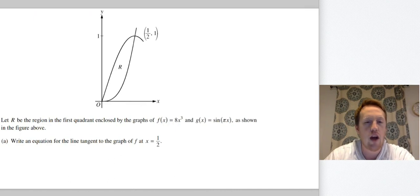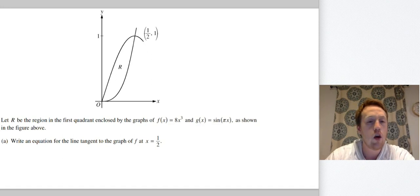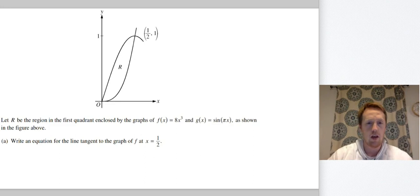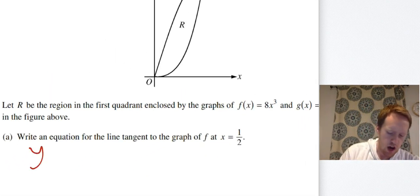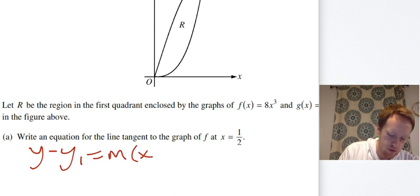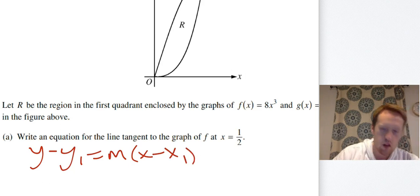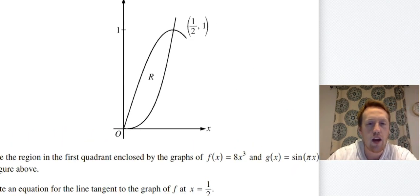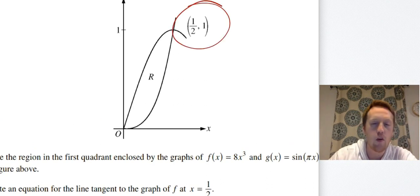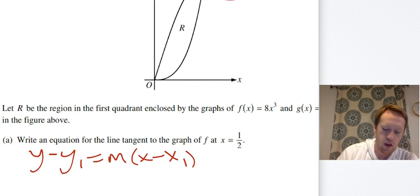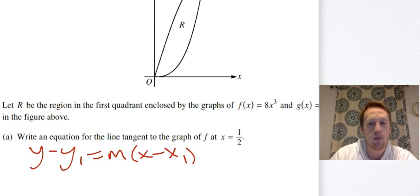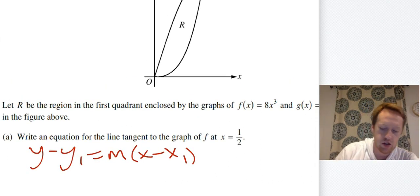Let R be the region in the first quadrant enclosed by f(x) = 8x³ and g(x) = sin(πx). Write an equation for the line tangent to the graph of f at x = 1/2. This is a no-calculator part. We know it should be y − y₁ = m(x − x₁). At x = 1/2 the y-value is 1, so x₁ = 1/2 and y₁ = 1. We just need the slope m.